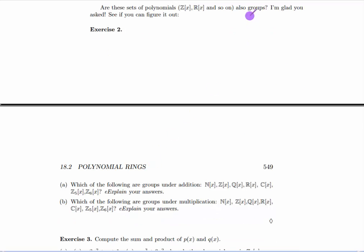Now in the early part of the book, we talked a lot about groups, and here we have a set of polynomials, various sets of polynomials with integer coefficients, or polynomials with real coefficients. Now you might ask, are these sets groups? Furthermore, we have two operations. We have addition and multiplication.